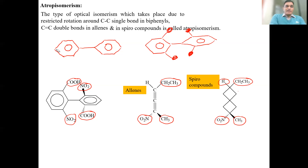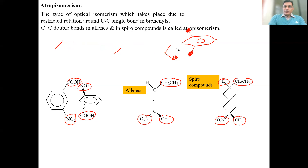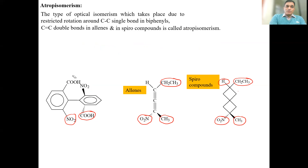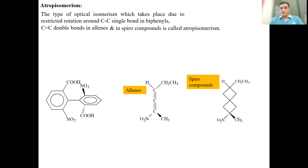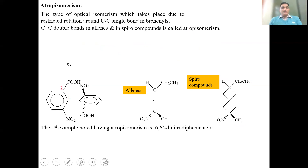Next, we look at the conditions. The conditions I mentioned alongside earlier — about when this rotation will be restricted — there are some additional points as well. What are all the conditions required to study atropisomerism? Let's look at these conditions.